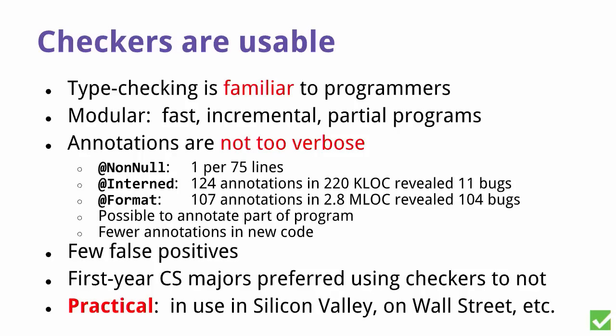For format strings — making sure the percent-S's and percent-D's are right — we saw 100 annotations in 3 million lines of code and they revealed 104 bugs. There are some false positives, but not too many. First-year computer science majors preferred using these to not using them. These are being used in Silicon Valley at big companies and at startups, on Wall Street — wherever programmers really care about their craft and want to get their code right.